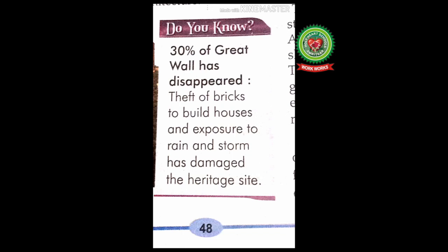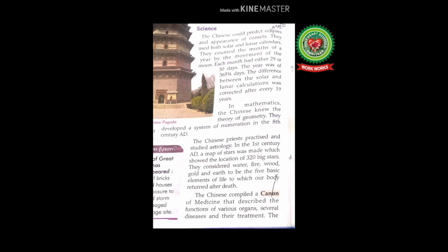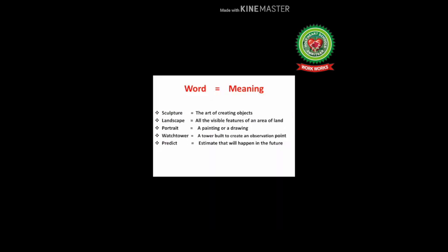Now let's start the last main feature of the Chinese civilization, that is science. The Chinese could predict eclipses and the appearance of comets. They used both solar and lunar calendars. They counted the months of a year by the movement of the moon; each month had either 29 or 30 days. The year was of 365 and one-fourth days. The difference between solar and lunar calculations was corrected after every 19 years.